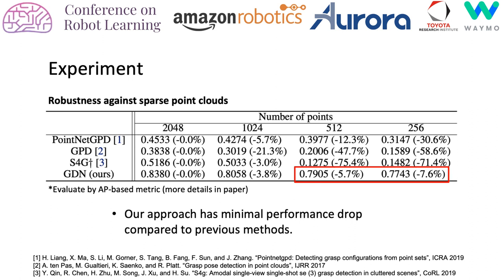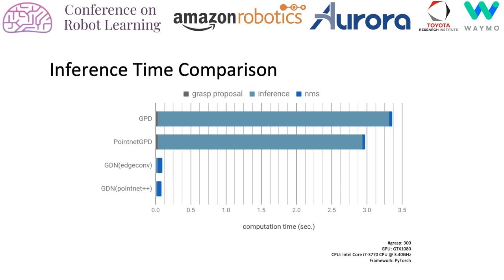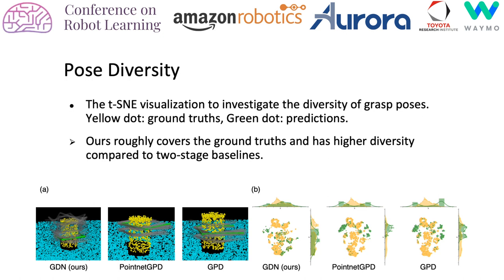Here is the experiment to test the robustness of each method. The result shows that our approach has minimal performance drop under various noisy point cloud conditions compared to previous methods. Furthermore, our method is about 20 times faster than the two-stage methods in inference time under the same configurations.